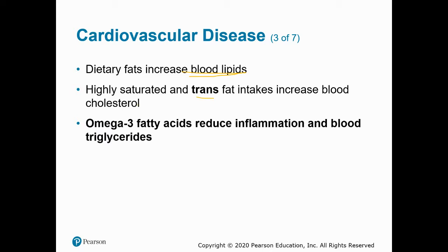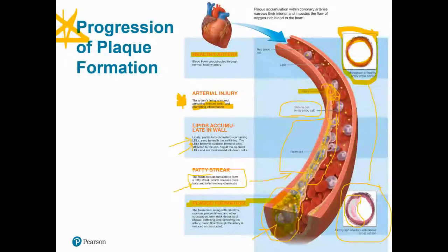Having too much saturated fat and cholesterol will raise your blood lipid profiles and increase the likelihood of plaque formation and the potential for plaque to rupture. The same is true for trans fats. Omega-3 fatty acids are actually cardioprotective — they reduce inflammation and can even help reduce the amount of triglycerides in your blood, counteracting the pro-inflammatory response.